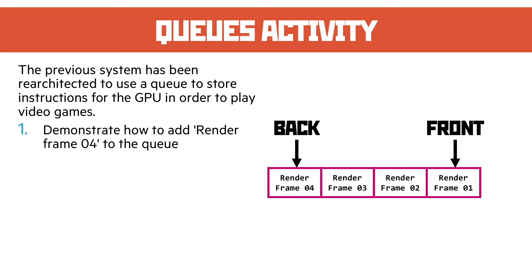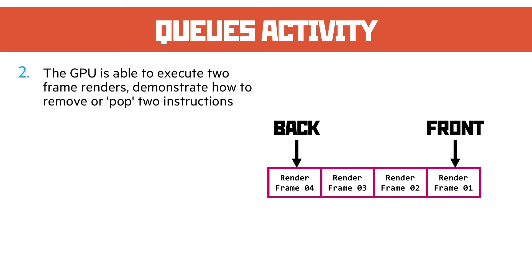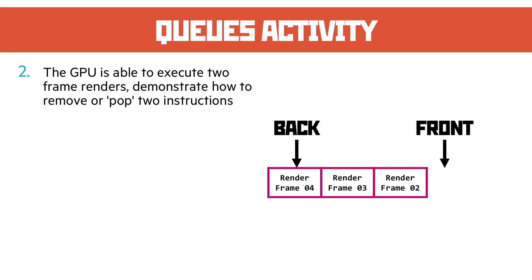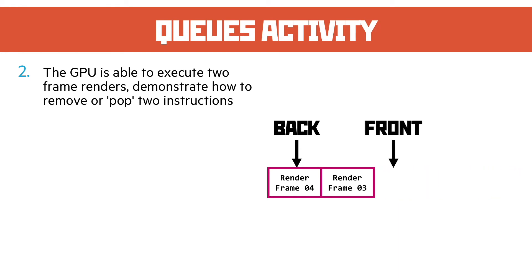The GPU is able to execute two frame renders, as in the last question. Demonstrate how to remove or pop two instructions. Remember, the point of a queue is it comes out of the front — so we take one and the pointer moves, we take another and the pointer moves. Our queue now has two items.